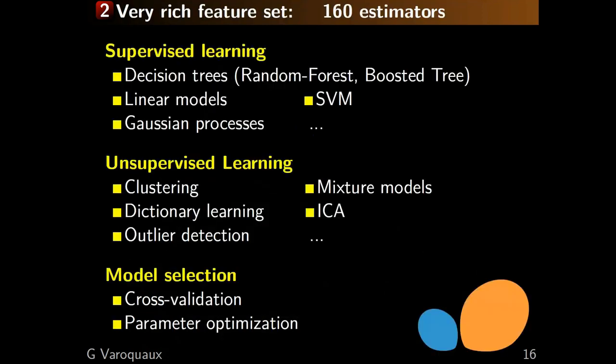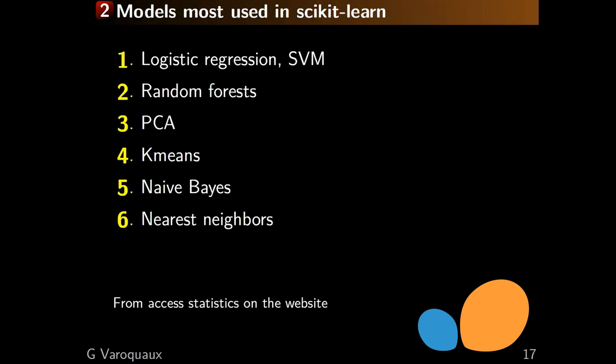We have a huge feature set — 160 estimators covering all kinds of different things. We don't really cover deep learning; we have multi-layer perceptrons if you really want, but the idea is we don't depend on GPUs, so you really shouldn't use us for deep learning. Looking at what models people actually use, the number one model is a linear model — that's used across many many applications — followed by random forest, PCA, k-means, and naive Bayes. It's always the simpler algorithms that get used most, and I think that's a fairly important message.